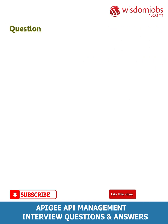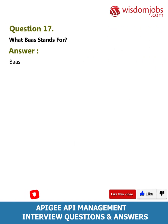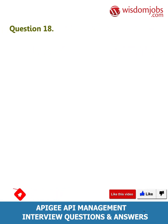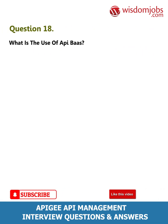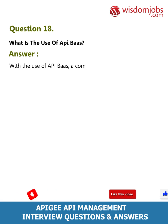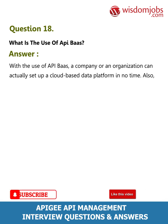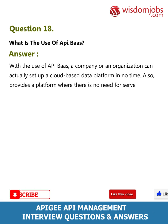Question 17: What does BaaS stand for? Answer: BaaS stands for Backend as a Service. Question 18: What is the use of API BaaS? Answer: With the use of API BaaS, a company or an organization can set up a cloud-based data platform in no time. It also provides a platform where there is no need for server-side coding or any sort of back-end development.